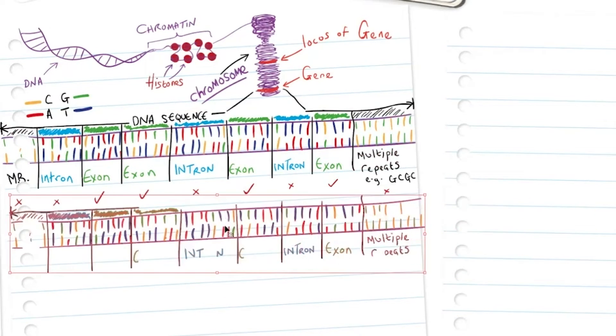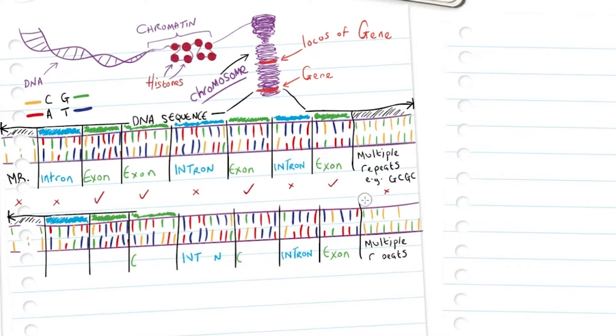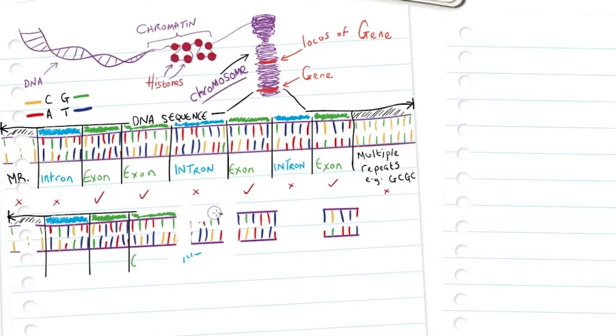If we take this sequence, the introns, those non-coding regions of our DNA sequence, are essentially spliced out of that sequence so we can remove them.